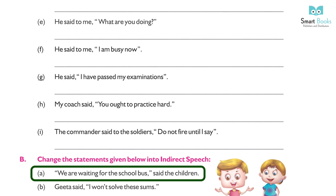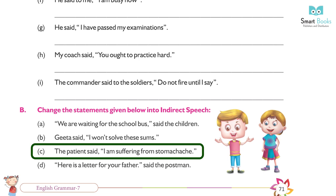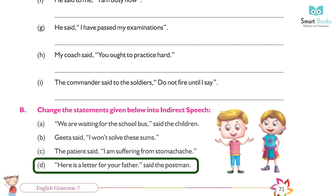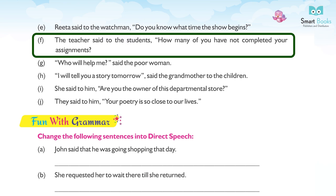Section B — Change the statements into indirect speech: (a) The children said, 'We are waiting for the school bus.' → The children said that they were waiting for the bus. (b) Geeta said, 'I won't solve these sums.' → Geeta said that she would not solve those sums. (c) The patient said, 'I am suffering from stomach ache.' → The patient said that he was suffering from stomach ache. (d) The postman said, 'Here is a letter for your father.' → The postman told me that there was a letter for my father. (e) Rita said to the watchman, 'Do you know what time the show begins?' → Rita asked the watchman if he knew what time the show began. (f) The teacher said to the students, 'How many of you have not completed your assignments?' → The teacher asked the students how many of them had not completed their assignments.